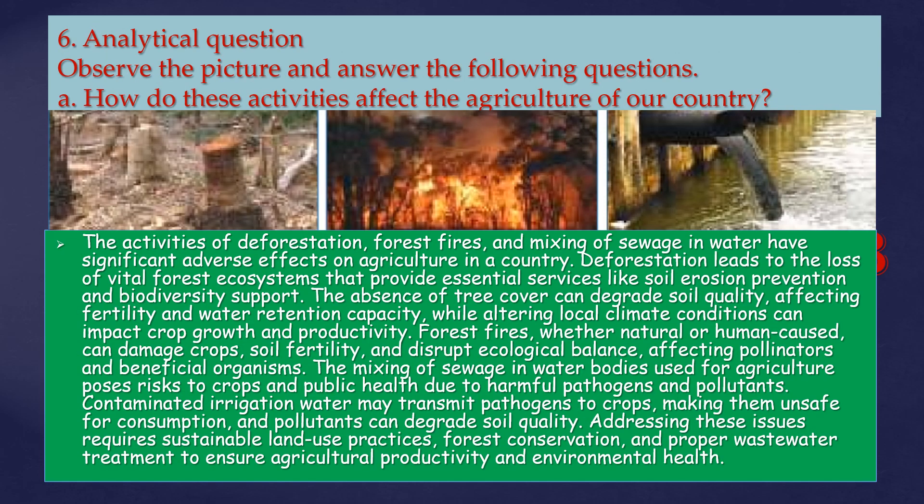Analytical question: observe the picture and answer the following questions. How do these activities affect the agriculture of our country? The activities of deforestation, forest fires, and mixing of sewage in water have significant adverse effects on agriculture. Deforestation leads to the loss of vital forest ecosystems that provide essential services like soil erosion prevention and biodiversity support. The absence of tree cover can degrade soil quality, affecting fertility and water retention capacity, while altering local climate conditions can impact crop growth and productivity.